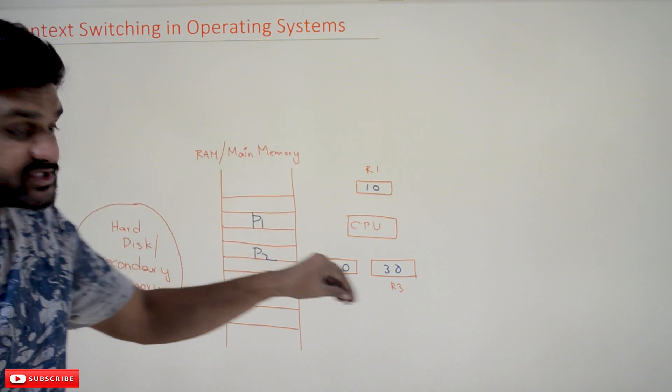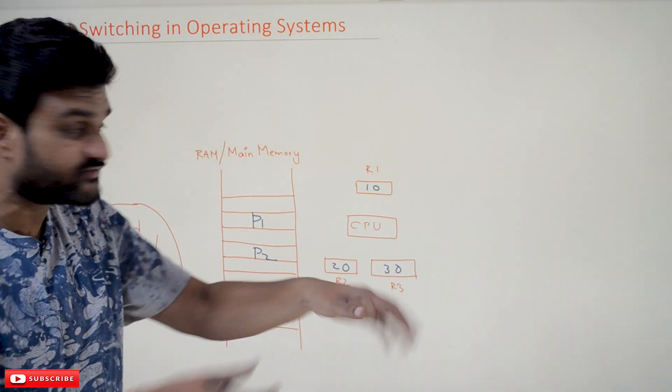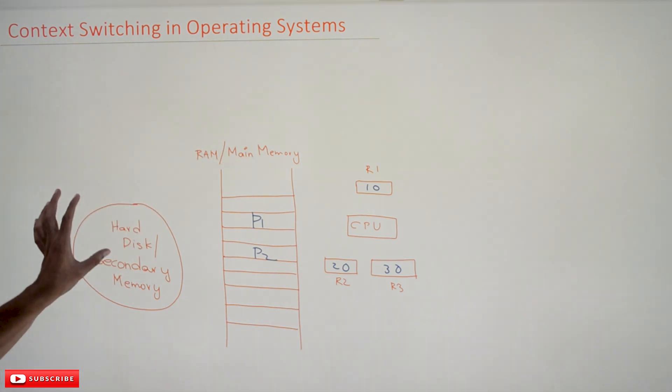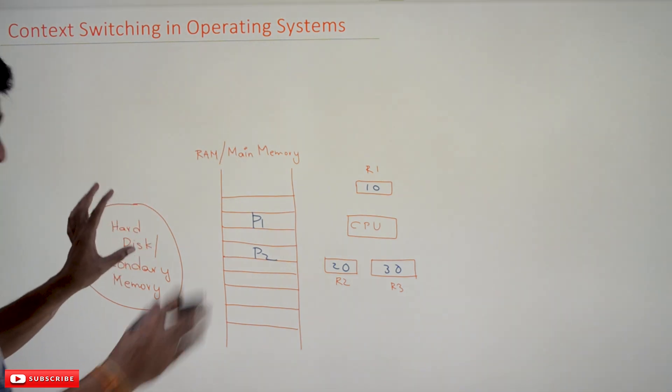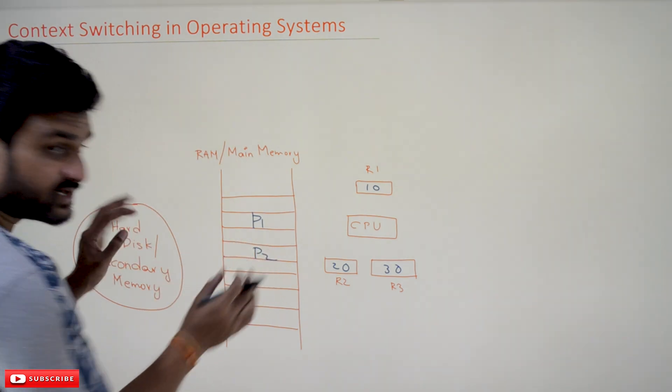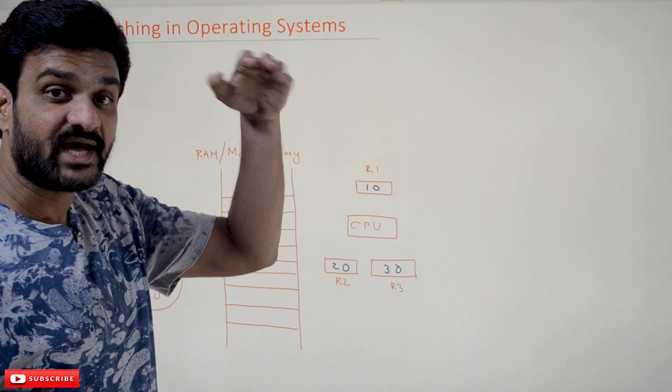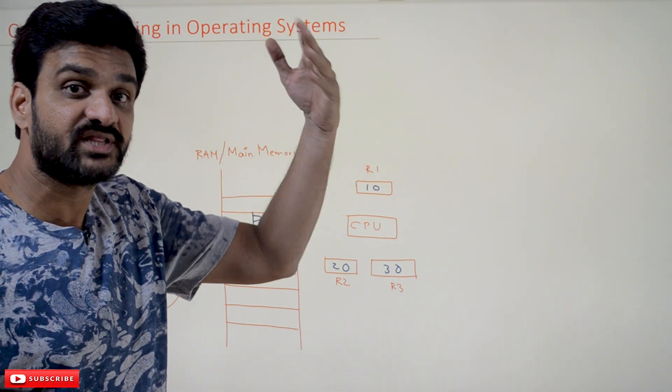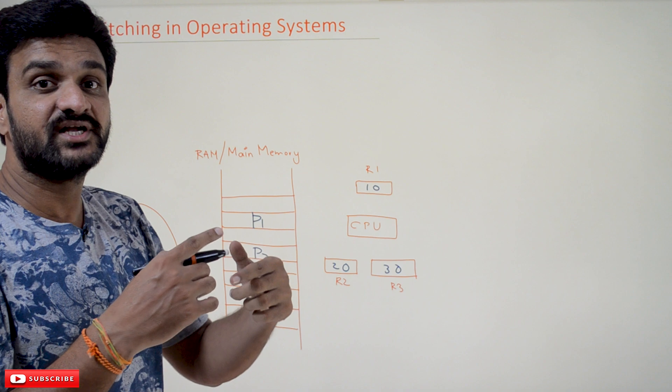So in the process of switching, as the P1 is getting switched from running state, all the details of the general purpose registers and the process state will get saved onto the process control block.